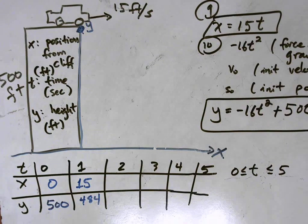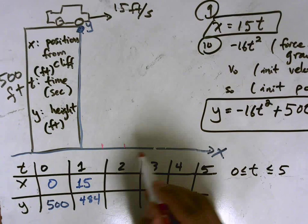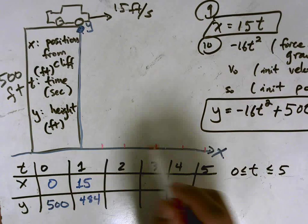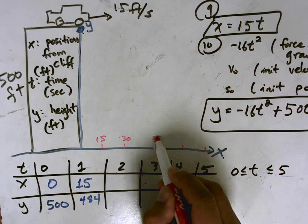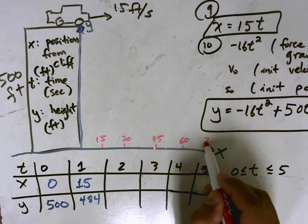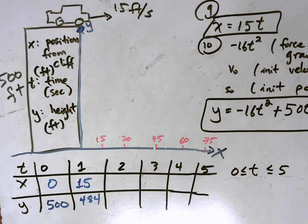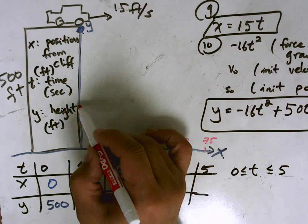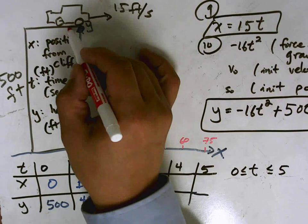I am going to label the axes so that we can get a better image of what's going on here. So 15, 30, 45, 60, 75. And along here, we're going to go in hundreds here. So 100, 200, 300, 400, 500 at the top.